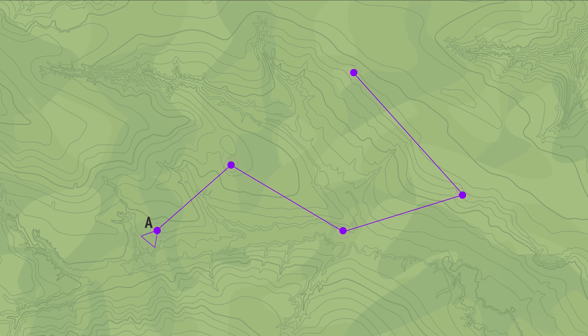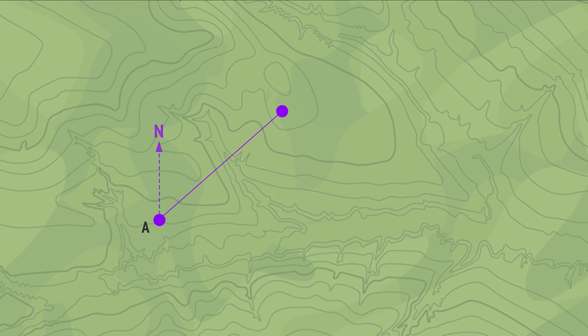Finally, this example involves an orienteering course that starts at A. The first leg heads on a bearing of 48 degrees for 370 metres. At the control point B, the course heads on a bearing of 120 degrees for 495 metres, until it reaches control point C. If control point C is exactly due east of the starting point A, how can we calculate the distance of C from A?